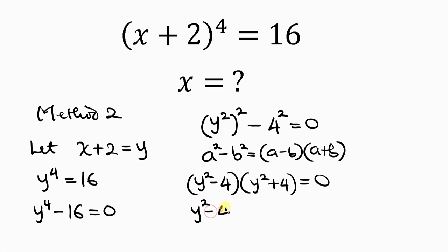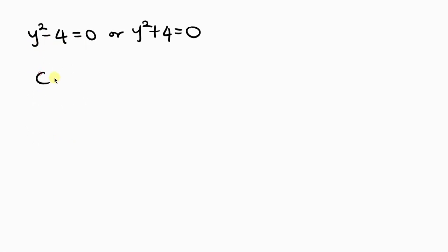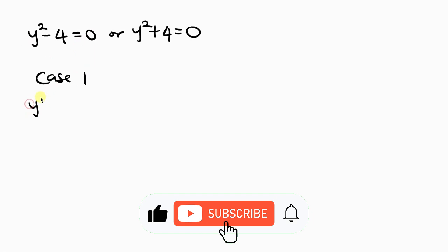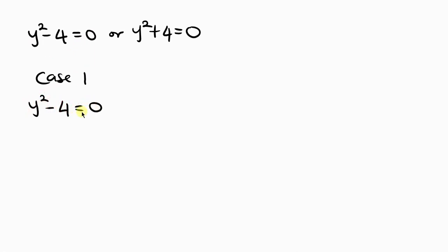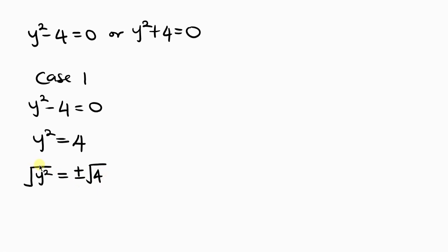For Case 1: y² − 4 = 0, so y² = 4. Taking the square root of both sides gives y = ±2. For Case 2: y² + 4 = 0, so y² = −4. Taking the square root gives y = ±2i. So the four values of y are: 2, −2, 2i, and −2i.